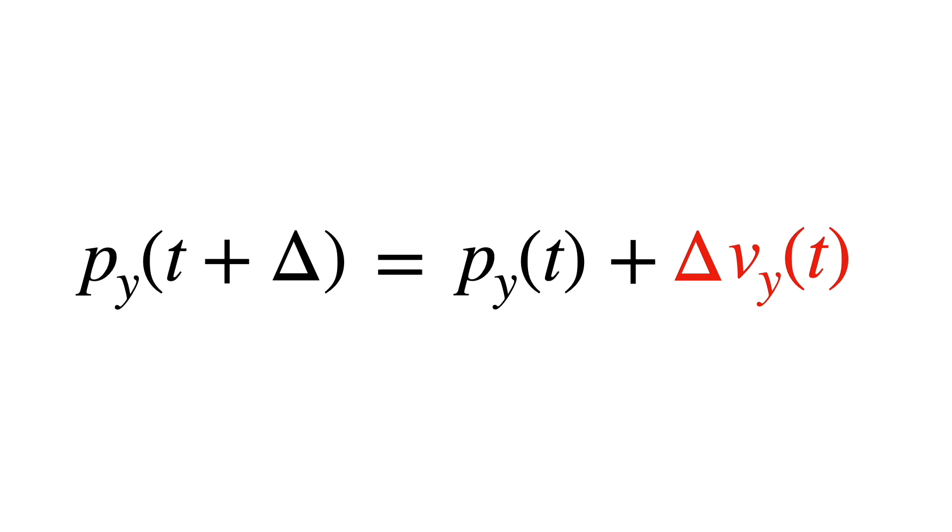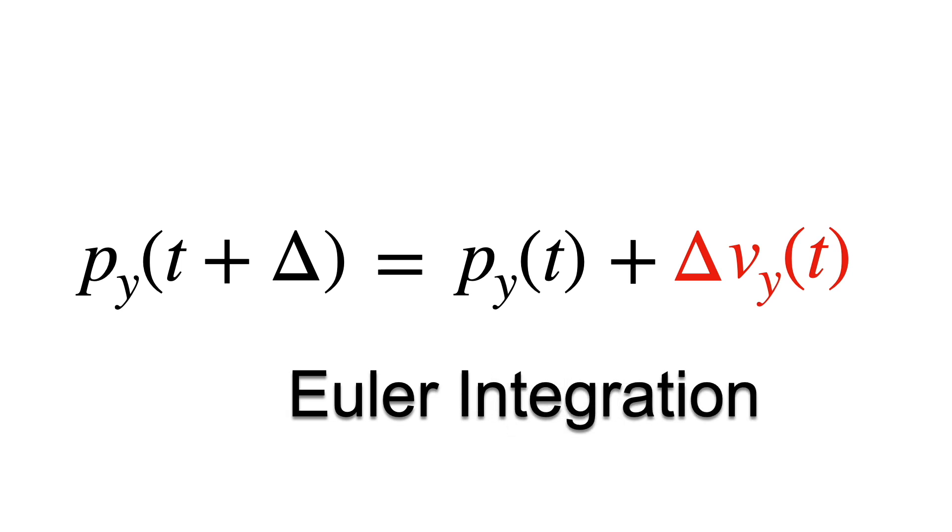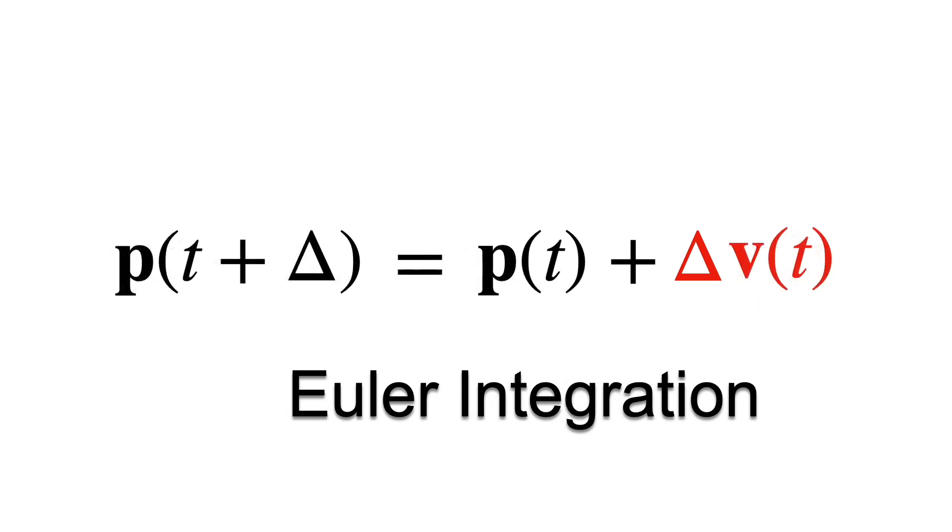We've just derived a simple update equation. This is called an Euler update. It's a simple way to perform integration. And here's a version where p and v are 3D vectors.